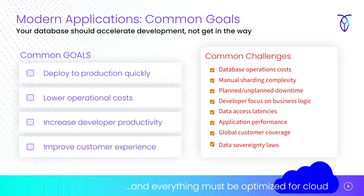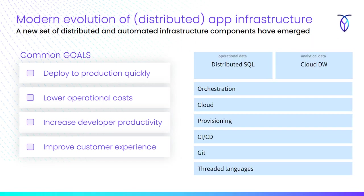Often in the Kubernetes community, we think about how difficult the database is. We end up running the database alongside Kubernetes, or in some kludgy kind of environment. Ultimately, everything is being optimized for the cloud. What we've seen is an emerging stack of technologies helping us reach these goals — using CI/CD, provisioning cloud infrastructure with Terraform, and an evolution of distributed application infrastructure.